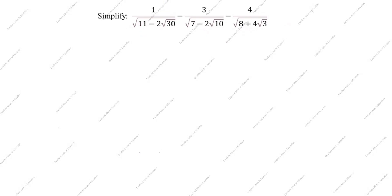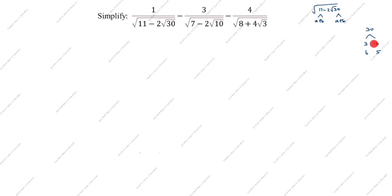Now we will take the first term and simplify. We have root of (11 minus 2 root 30). We will split 11 as a plus b format, and 30 also as a plus b format — this a plus b should be the same number. For 30, we try 3 times 10 and 6 times 5. Adding: 3 plus 10 is 13, but 6 plus 5 is 11 — which matches. So 6 and 5 are correct.